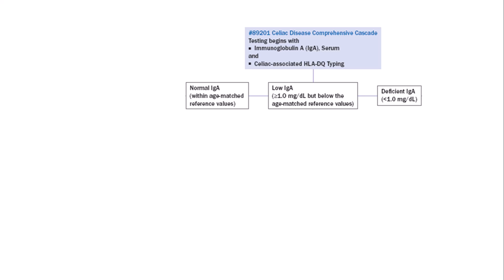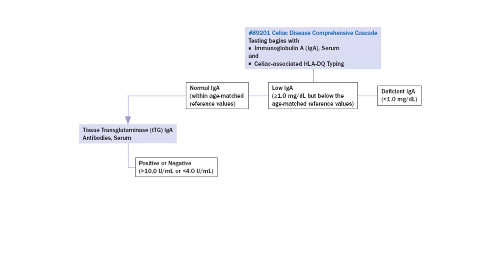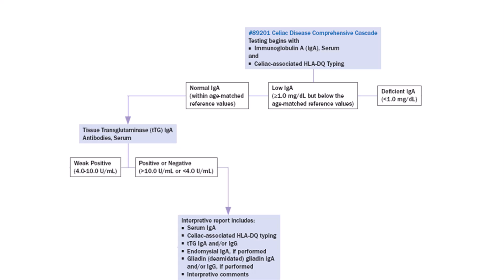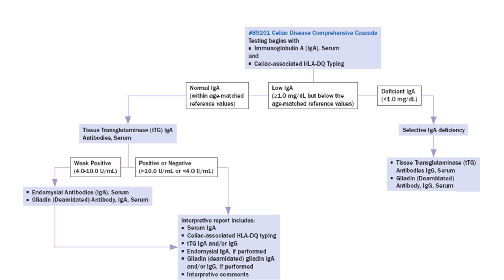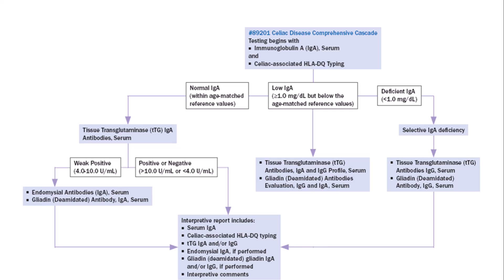The comprehensive cascade includes HLA typing and a reflex of serology tests, beginning with both total IgA and HLA-DQ typing. All further testing reflexes automatically based on the total IgA results, similar to the serology cascade, and independent of the HLA result. For normal total IgA, a TTG IgA is performed; for positive and negative results, no further testing is required. If the TTG IgA is weakly positive, EMA and deamidated gliadin IgA are performed. For individuals with selective IgA deficiency, testing for the IgG isotype for TTG and deamidated gliadin antibodies is performed. For a low total IgA result, both isotypes for TTG and deamidated gliadin are performed.